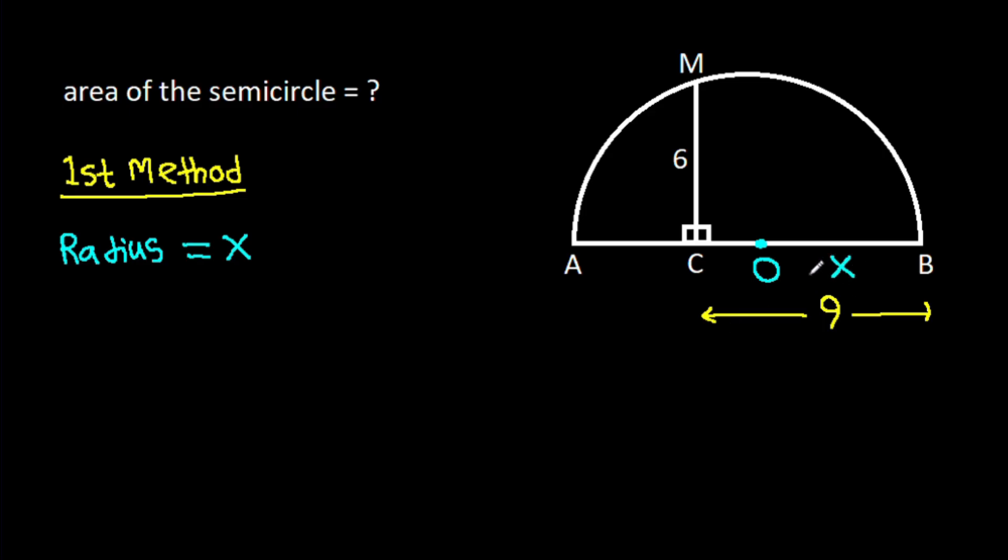it will be X and MO, it will be X. And CO, it will be BC minus BO, and BC is 9 minus BO is X. So CO is 9 minus X.